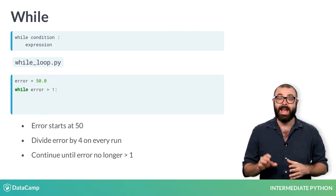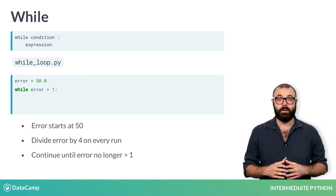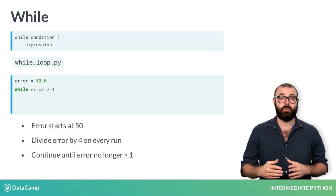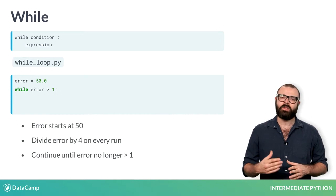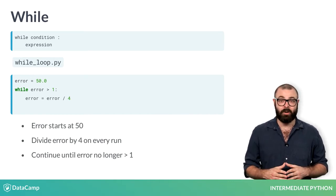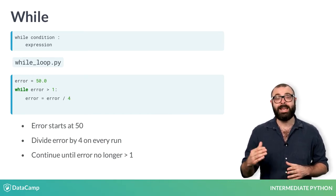In the condition part, we write error greater than 1 so that the while loop executes again as long as the error is above 1. Inside the code, we divide the error by 4 and update the error variable.